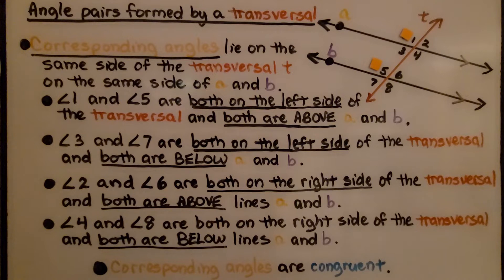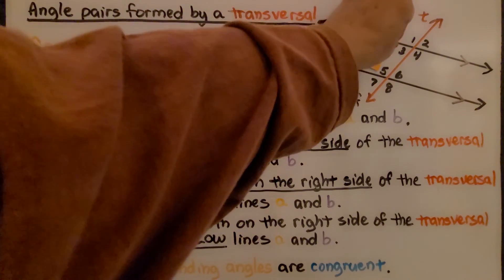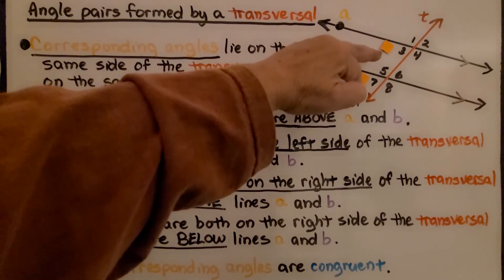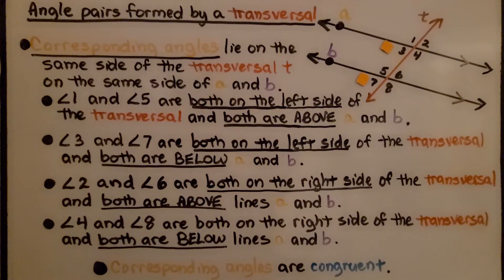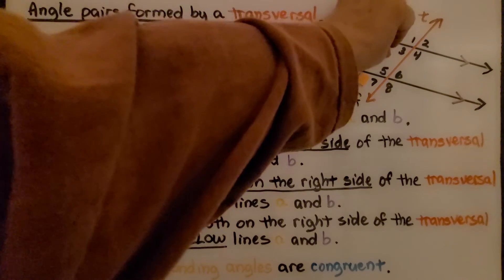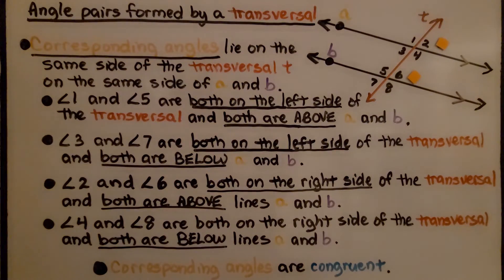Angle 3 and angle 7 are both on the left side of the transversal and both are below lines A and B, so they're corresponding angles. Angle 2 and angle 6 are both on the right side of the transversal and both are above lines A and B.